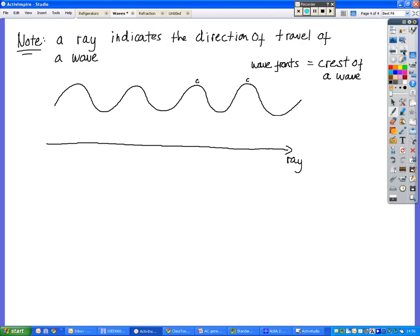So one final note on the vocabulary of waves. A ray, we might refer to a ray diagram or a ray of light. A ray basically tells you the direction of travel of the wave. So it's much easier just to draw a straight line with an arrow indicating which way it's going than to draw waves.